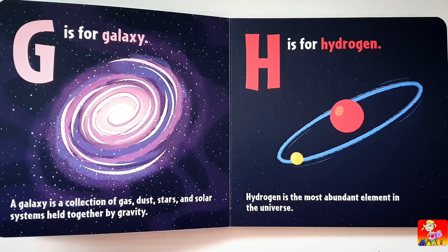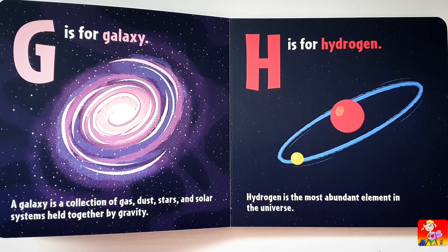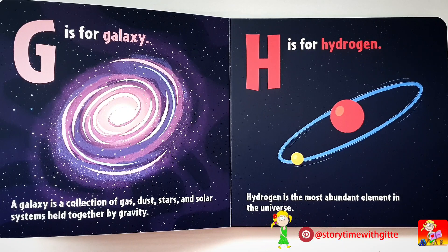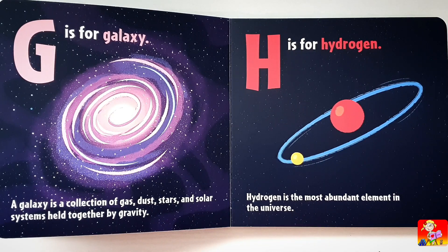G is for Galaxy. A galaxy is a collection of gas, dust, stars and solar systems held together by gravity. H is for Hydrogen. Hydrogen is the most abundant element in the universe.